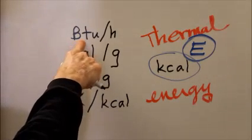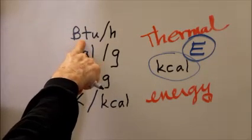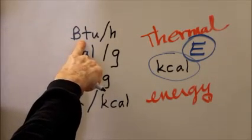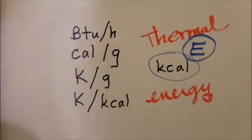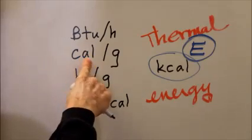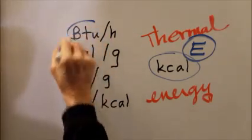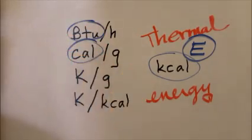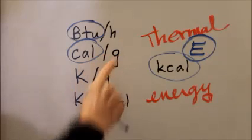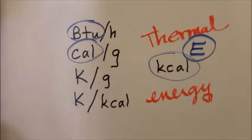British thermal unit is a unit of energy and a unit of thermal energy to boot, but a British thermal unit per hour is a unit of power, not energy. A calorie is a unit of energy, but calories per gram, not energy anymore, that's something else.